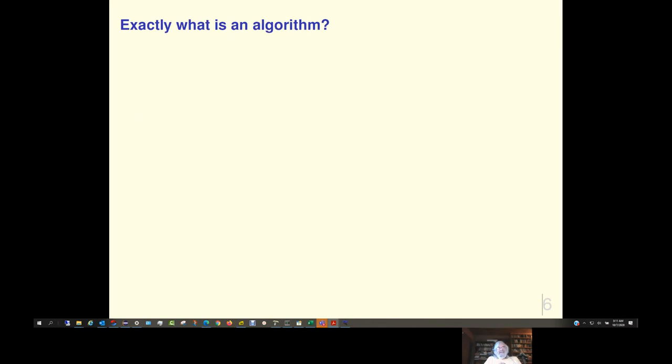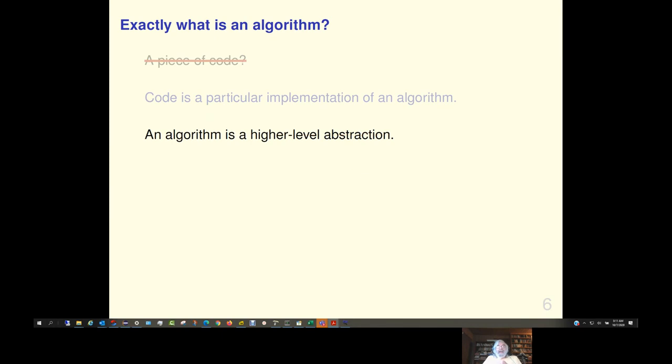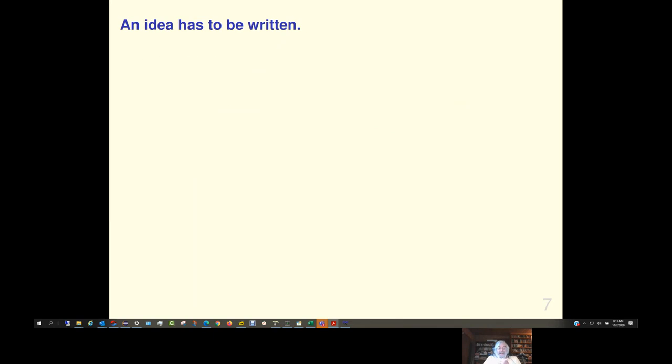So, exactly what is an algorithm? Is it a piece of code? No, it's not a piece of code. Code is a particular implementation of an algorithm. An algorithm is a higher-level abstraction. Or an architecture. It's an idea, basically.